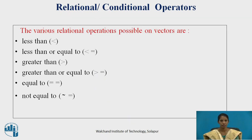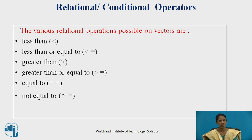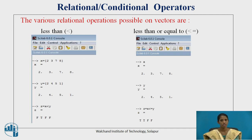Relational and conditional operators: the various relational operations done on vectors use mainly 6 operators in Scilab. If the answer is true it gives T, and if the answer is false it gives F. The operators are: less than, less than or equal to, greater than, greater than or equal to, equal to, and not equal to.